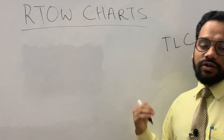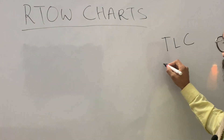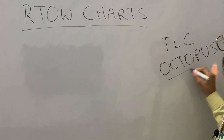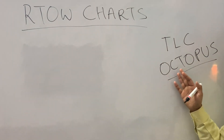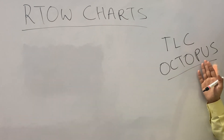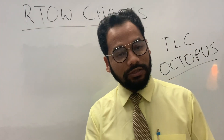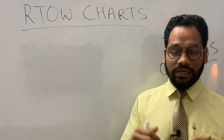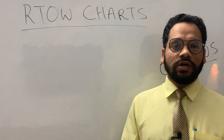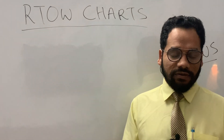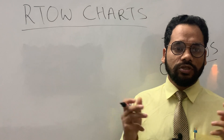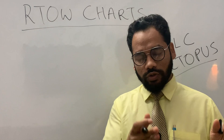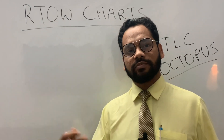Now we have another software called OCTOPUS — O-C-T-O-P-U-S — which stands for Operational and Certified Takeoff and Landing Performance Universal Software. This software has been used to generate the RTOW charts as well. In this session I'm going to show you an RTOW chart, and in upcoming sessions we'll discuss how to use these charts and make the performance calculations for takeoff.